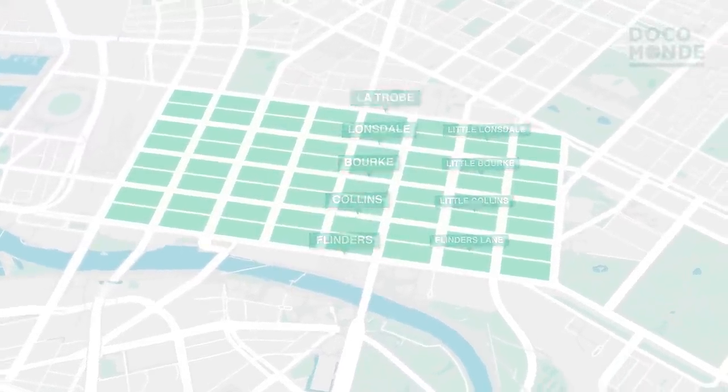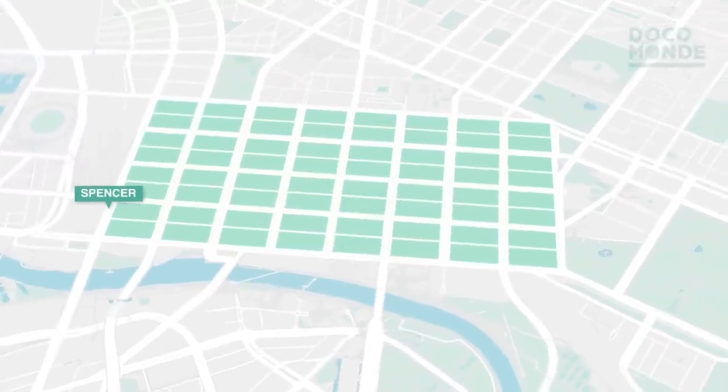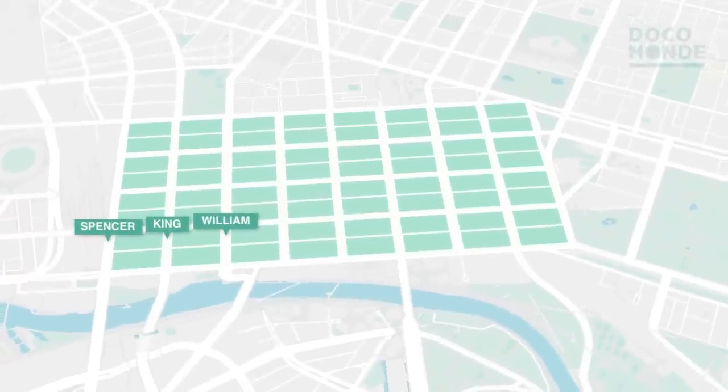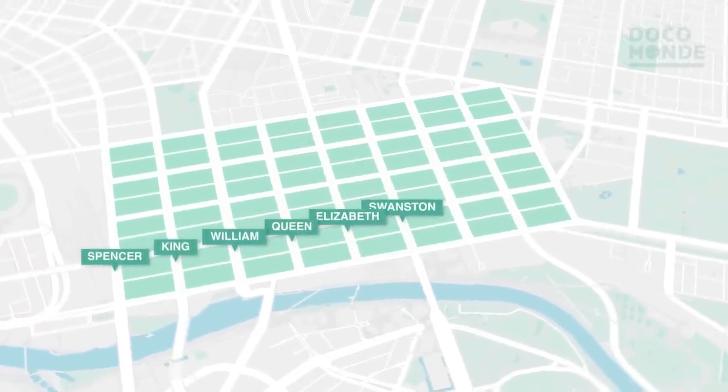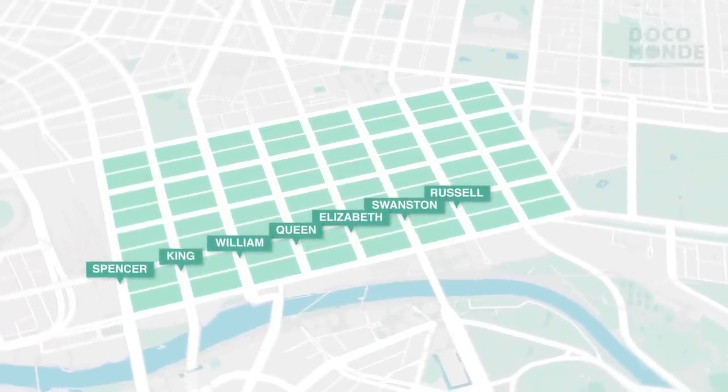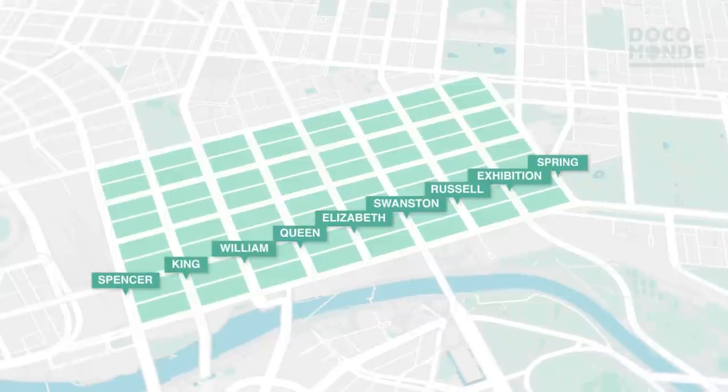Running north to south are Spencer, King and William, Queen and Elizabeth, Swanston, Russell, Exhibition and Spring.